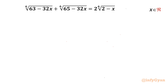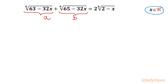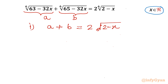Let us get started by considering a substitution. The very first radical I will consider as 'a', and the second radical term, the 6th root of (65 minus 32x), I will consider as 'b'. So one important equation I can write now: a plus b equals twice the 6th root of (2 minus x). This is our equation number 1.